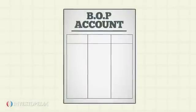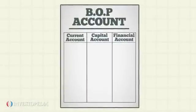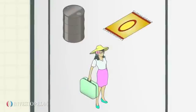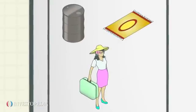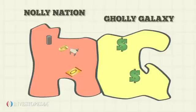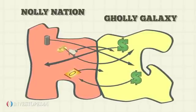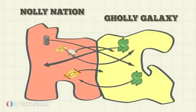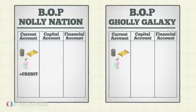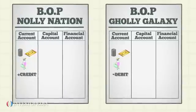The BOP account is broken down into three separate categories. The current account includes any exchange of finished goods and services, such as tourism, for consumption purposes. When Nolly Nation sells goods or services to Golly Galaxy, the payments made to Nolly are recorded as a credit to Nolly's BOP and a debit to Golly's BOP account.